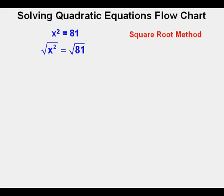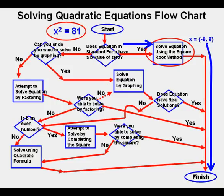Here is our equation to solve using the square root method. We take the square root of both sides of the equation, and we are left with x equals plus or minus the square root of 81, which is x equals plus or minus 9. That can be rewritten in set notation as x equals {-9, 9}. We take our answer and go all the way to the finish. The blue arrows show the flow path we took.